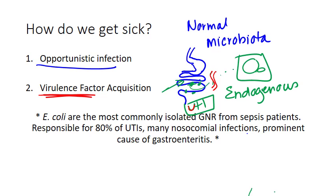Sometimes you can get virulence factor acquisition — meaning E. coli that previously weren't causing any harm have acquired something that makes them pathogenic. That typically happens through a plasmid. If they acquire a plasmid with a virulence factor, it makes them better at adhering to our epithelial cells so they can stay there, grow, and cause disease. Or the plasmid contains a toxin, and the toxin is what's causing disease — not necessarily the bacteria itself.